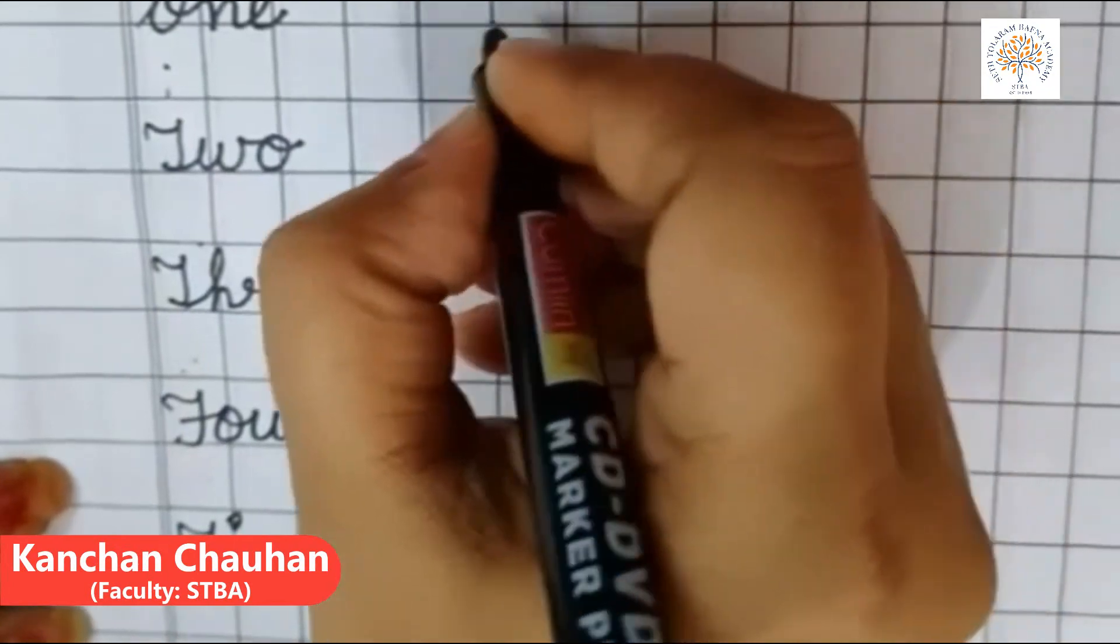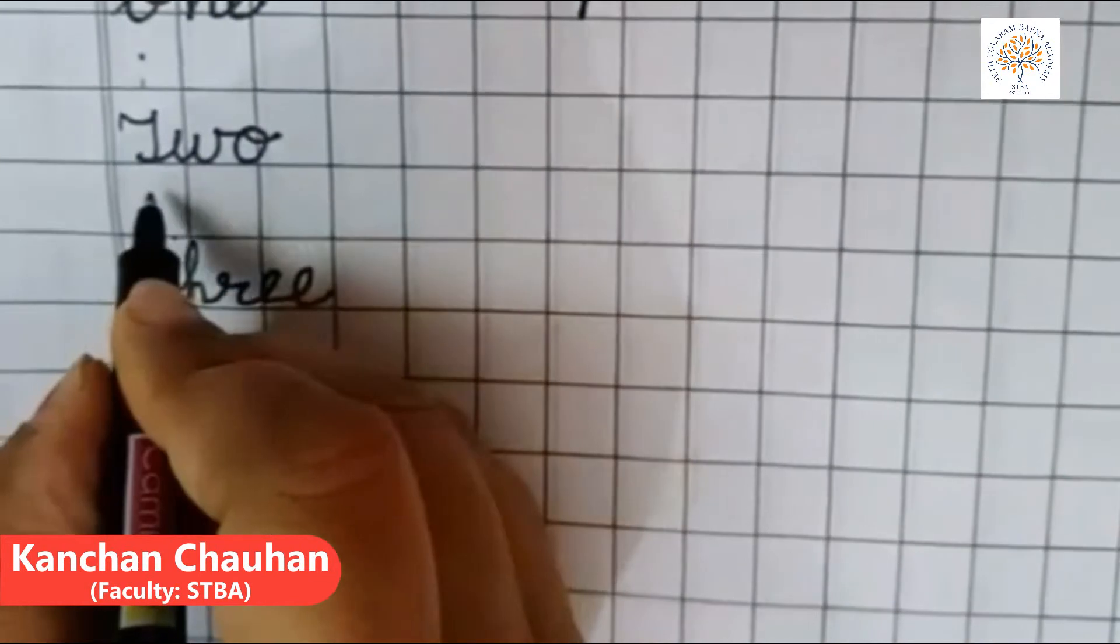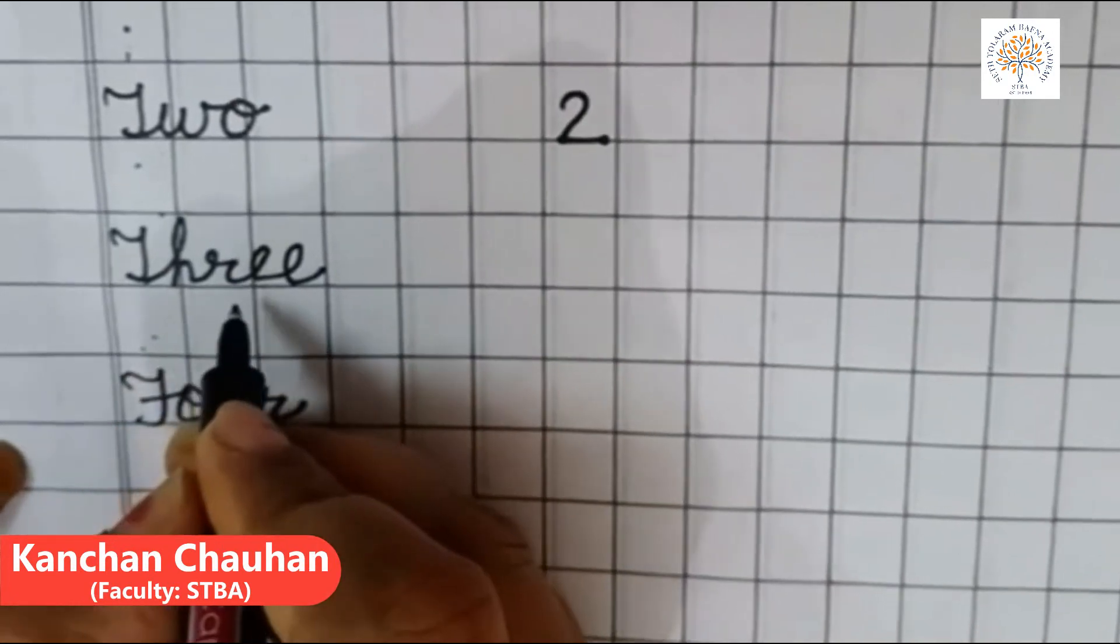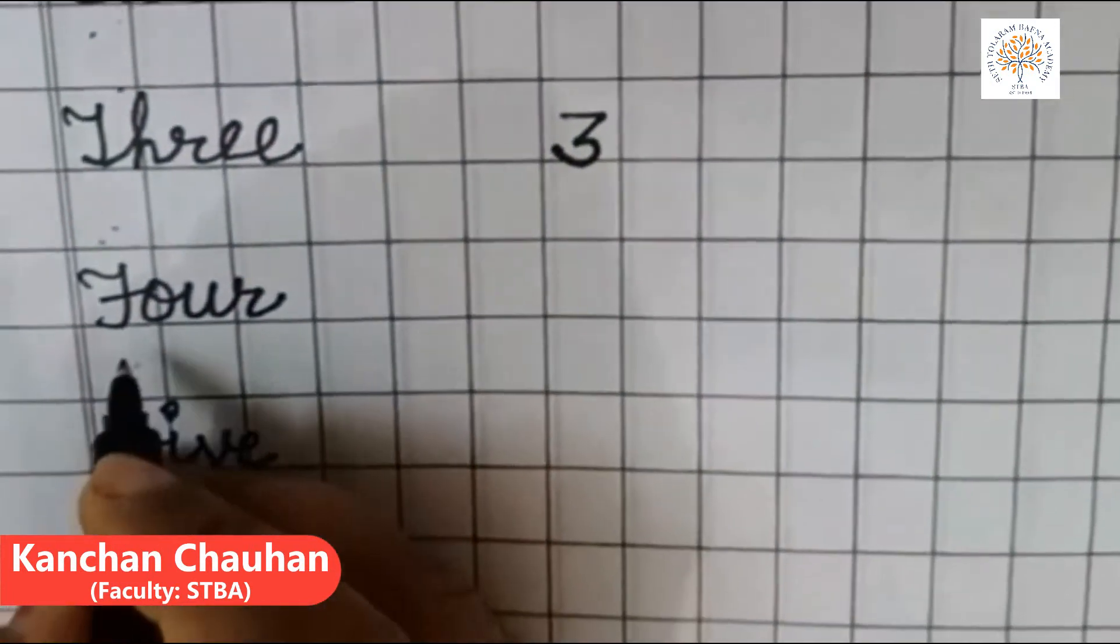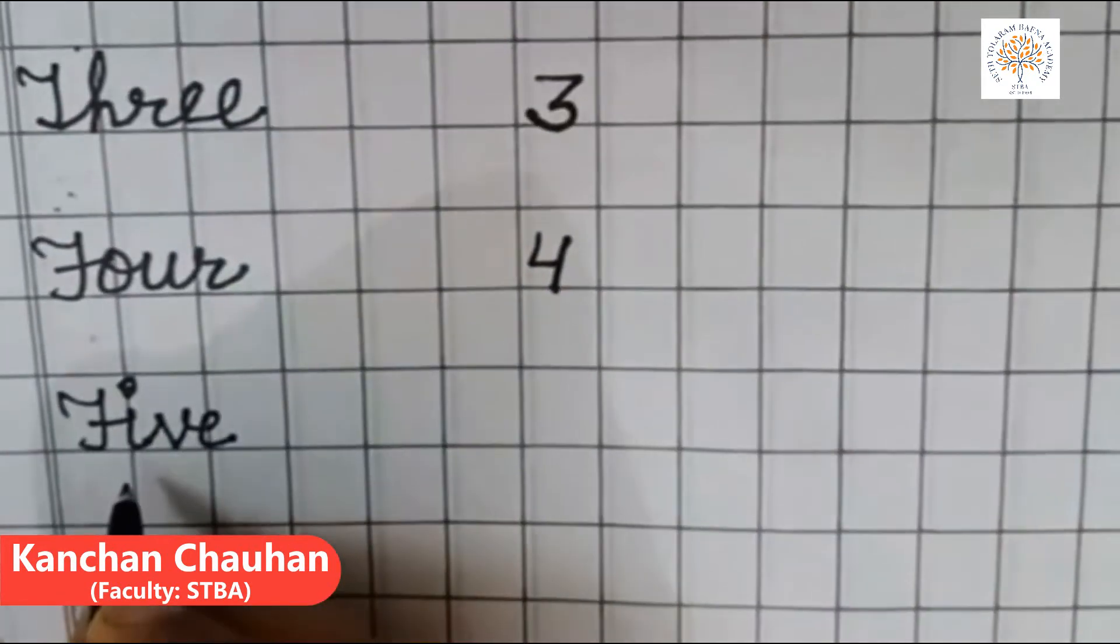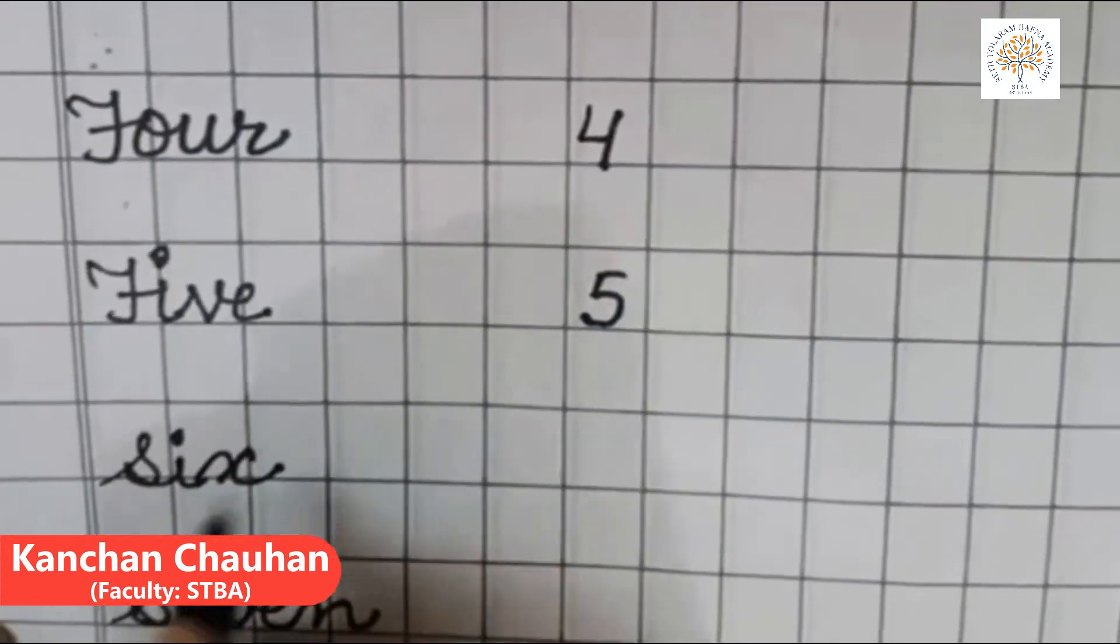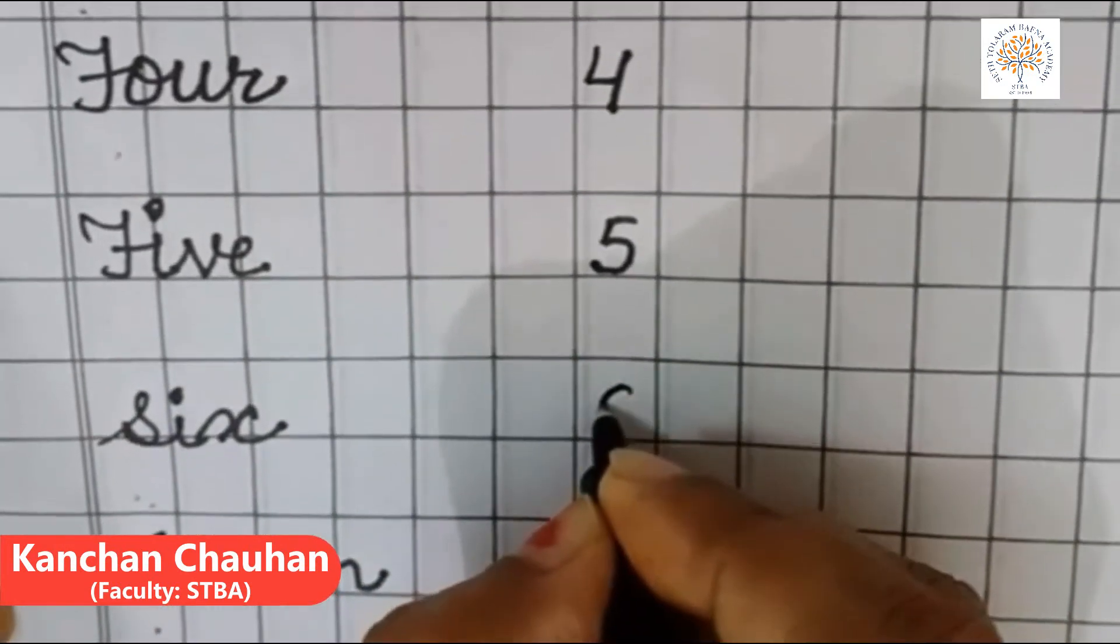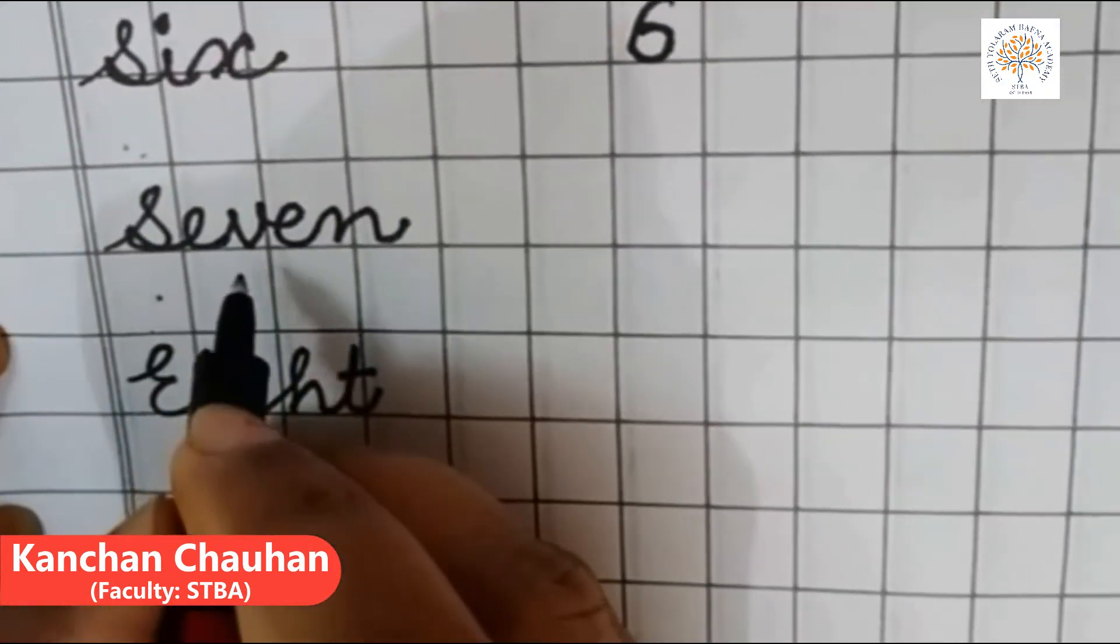O-N-E-1 and numeral for this number name is 1. T-W-O-2 and numeral is 2. T-H-R-E-E-3 and numeral is 3. F-O-U-R-4, numeral is 4. F-I-V-E-5, this is numeral 5.